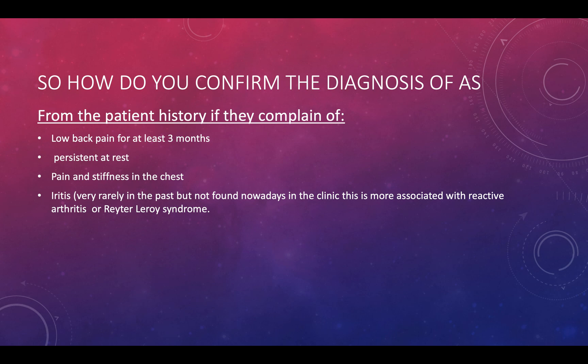There is also pain and stiffness in the chest region. Uveitis — inflammation of the eye — is very rarely involved nowadays and is more commonly found in reactive arthritis and Reiter's syndrome, which is covered in a different video on the channel.